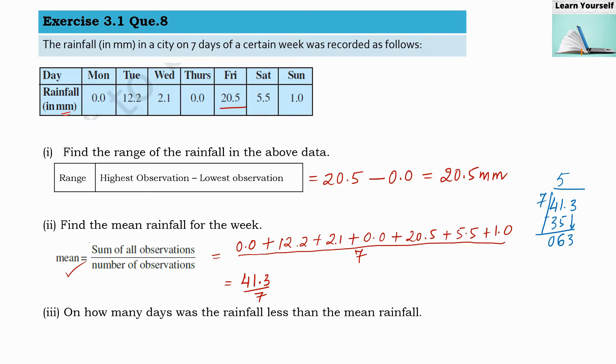So it is 63 and here decimal point is there, so same decimal point I am going to maintain here. Seven nines are 63, so 63 minus 63 we will get zero. So our answer is 5.9. Our arithmetic mean for seven days is 5.9 millimeters.